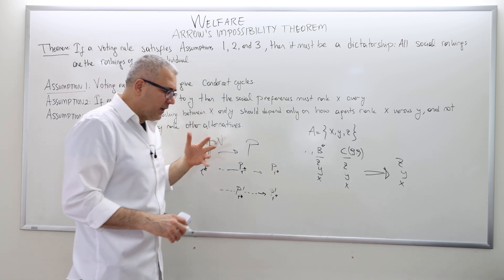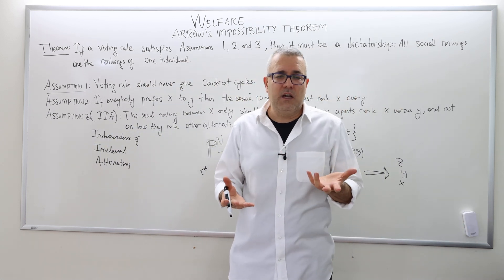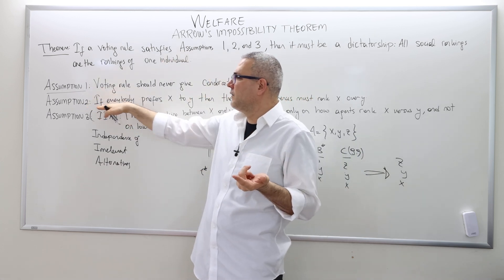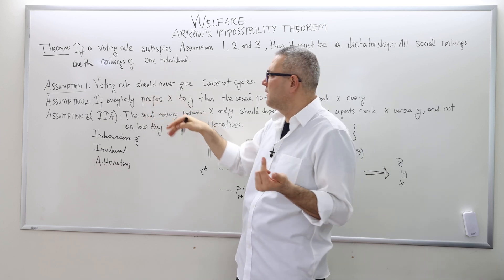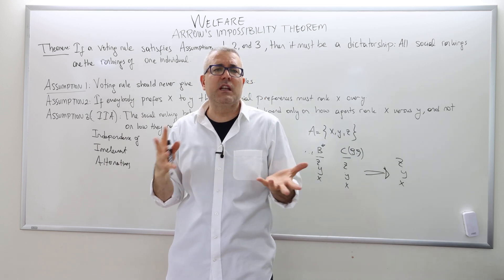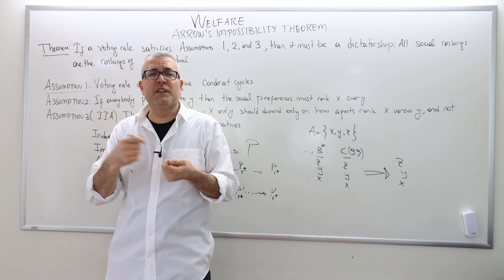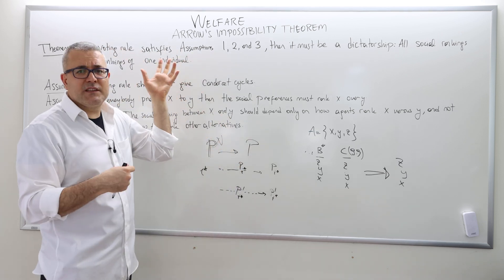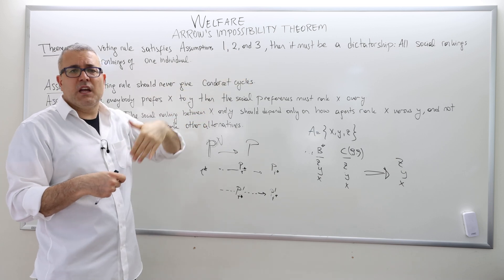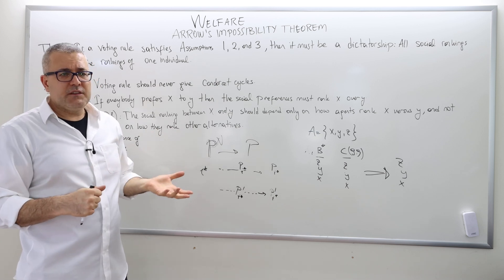So this is a very strong result. In some sense it says that IIA — which is weaker than Pareto efficiency — and the no-Condorcet-cycle condition are not consistent with democracy, because the only rule satisfying these properties is dictatorship, which is not a democratic rule. This is what Arrow's Impossibility Theorem says.